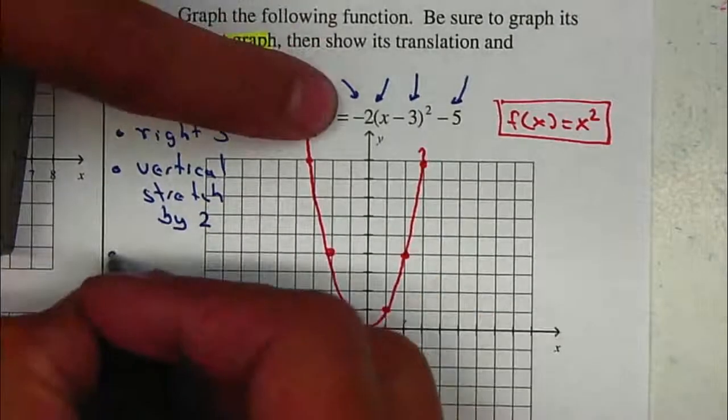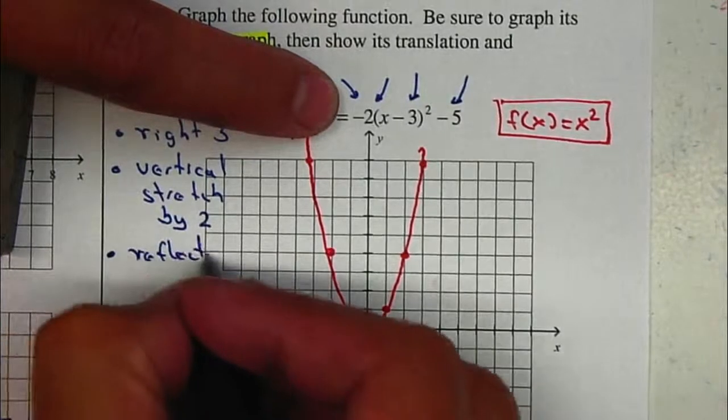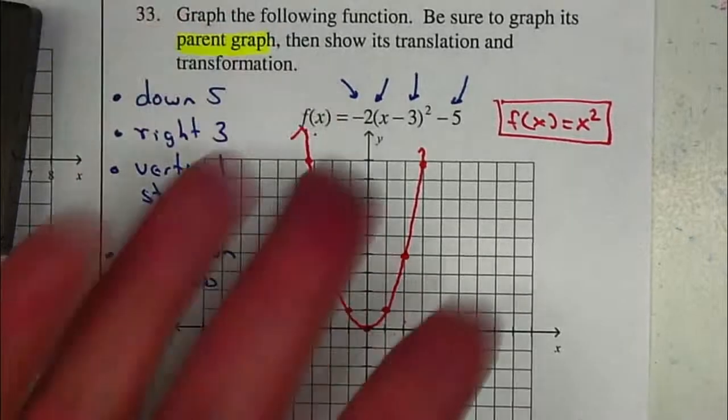And the negative, it's outside, so it's going to be a reflection on the x-axis. So basically, it's just going to be facing down.